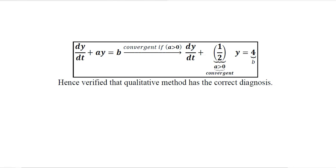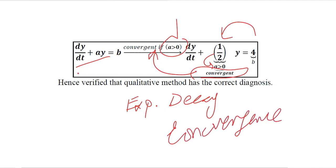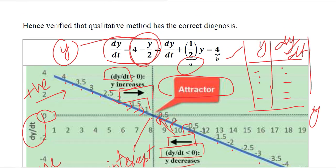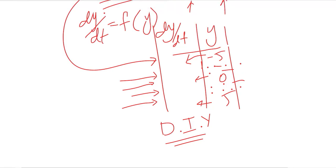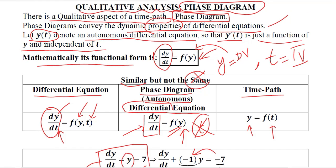This was the graphical analysis of the autonomous differential equation. We can use the quantitative method to verify the answer. The standard form requires that a is positive for a convergent outcome. Rearranging the equation, we get one-half times y, and one-half is the value of a — this shows convergence. The qualitative method is verified because the value of a is positive, confirming exponential decay and hence convergence. This is how we qualitatively analyze a differential equation as an autonomous differential equation and verify it with quantitative analysis by judging the sign of a and forecasting exponential decay or exponential growth.